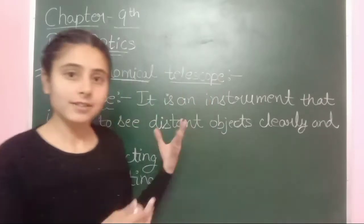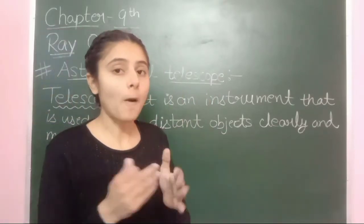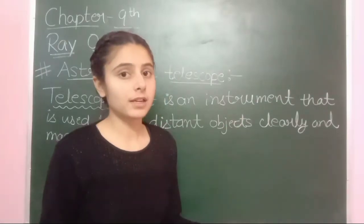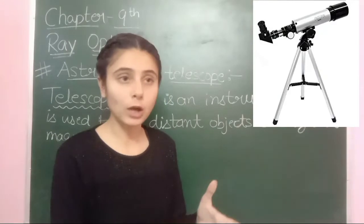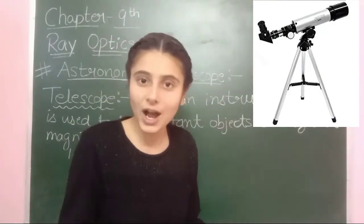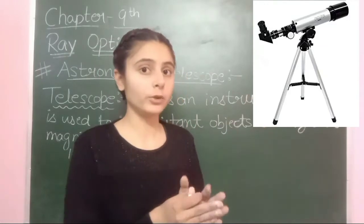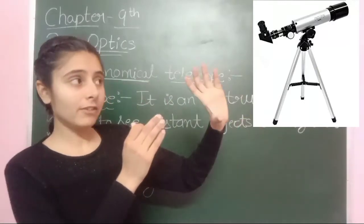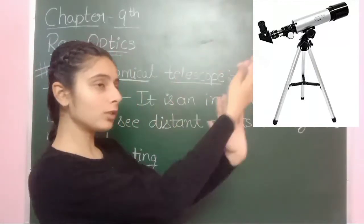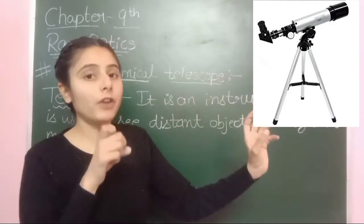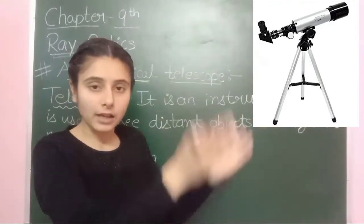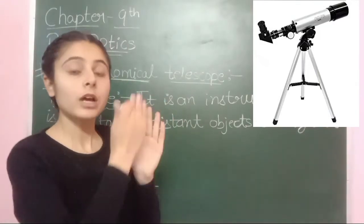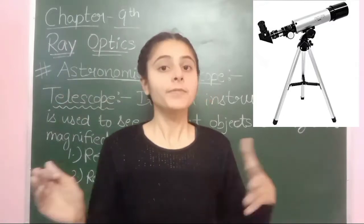In the case of the microscope, the objective size is small and the eyepiece is large. But in the case of the telescope, the aperture of the objective is large and the eyepiece is small. The large objective collects more light to form a magnified image, while the eyepiece further magnifies it.